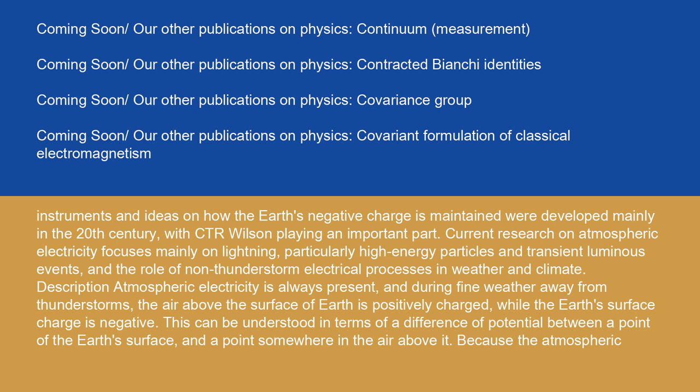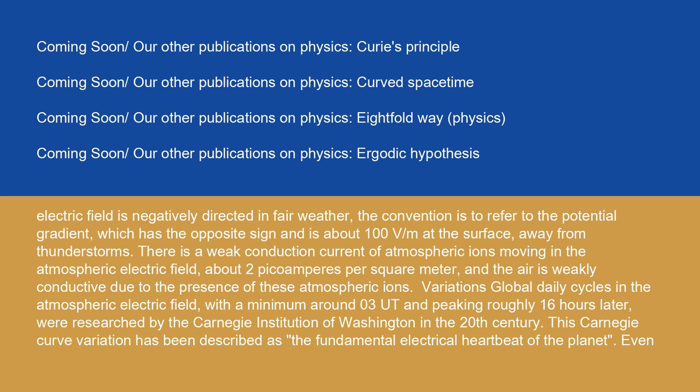Atmospheric electricity is always present. During fine weather away from thunderstorms, the air above the surface of Earth is positively charged, while the Earth's surface charge is negative. This can be understood in terms of a difference of potential between a point of the Earth's surface and a point somewhere in the air above it. Because the atmospheric electric field is negatively directed in fair weather, the convention is to refer to the potential gradient, which has the opposite sign and is about 100 V/m at the surface, away from thunderstorms. There is a weak conduction current of atmospheric ions moving in the atmospheric electric field, about two picoamperes per square meter, and the air is weakly conductive due to the presence of these atmospheric ions.